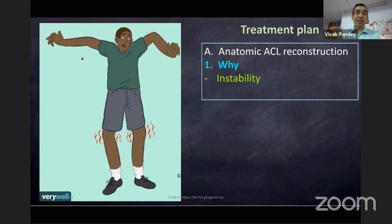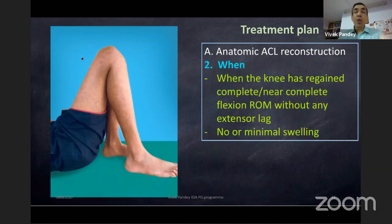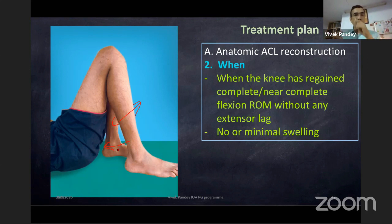If a patient has recurrent instability, that is the surgical indication. Rarely, pain alone may be a reason, but you should have MRI-proved tear. When should you operate? When the knee has regained complete or near-complete range of motion with no extensor lag — flexion limitation can be tolerated but never a lag — and there is minimal swelling. If gross swelling is present, first rehabilitate: aspirate, cold compress, quadriceps exercises, compression bandage, then review in a few weeks.